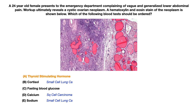Coming back to the question: if the answer were B, D, or E, you would associate those labs with paraneoplastic findings of lung cancer. For cortisol, that's small cell lung cancer with ectopic ACTH. For sodium, you can get SIADH in some paraneoplastic findings, so sodium levels would be measured in small cell lung cancer. Calcium applies to squamous cell carcinoma, and fasting blood glucose could technically relate to Cushing syndrome, but that's not a specific answer here.